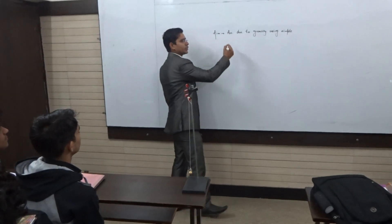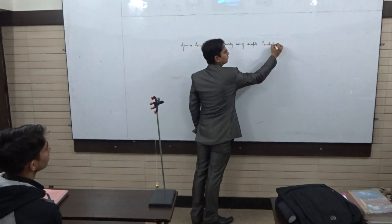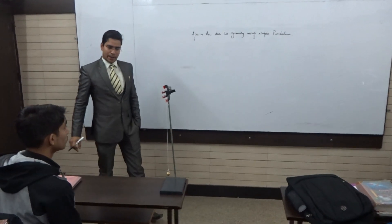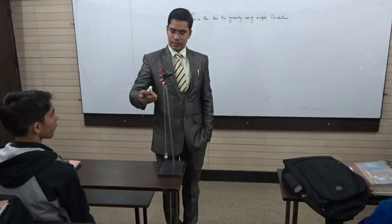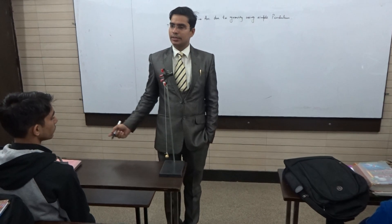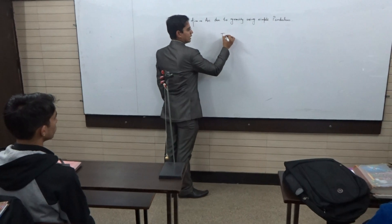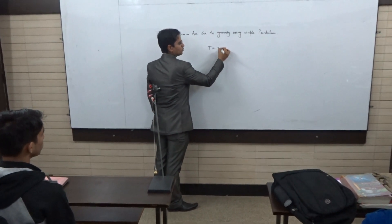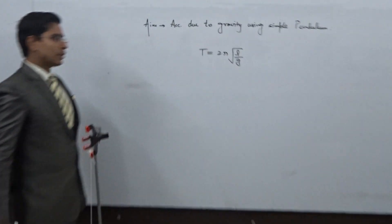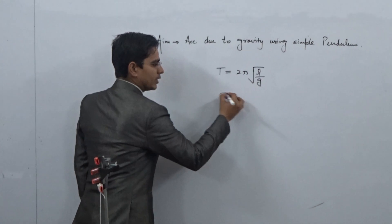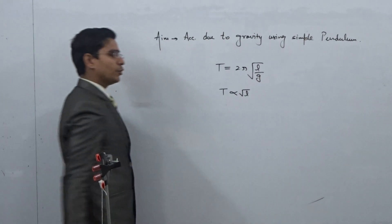Today's practical is acceleration due to gravity using a simple pendulum. A pendulum is a simple device in which we have a bob tied to a thread, fixed on a rigid stand. The formula for the time period is T = 2π√(L/g), which indicates that the time period of a pendulum is directly proportional to the square root of the length of the pendulum.